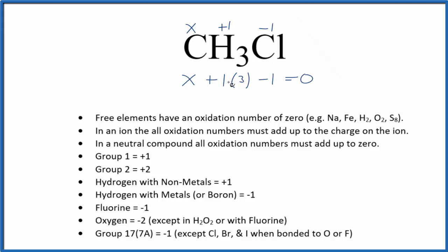So X plus three minus one, that's X plus two, equals zero. So we subtract two from each side. X equals negative two.